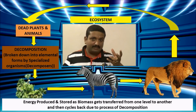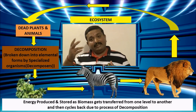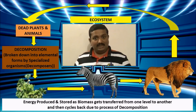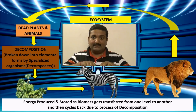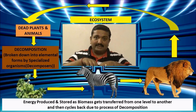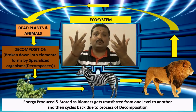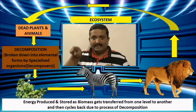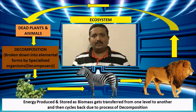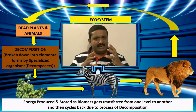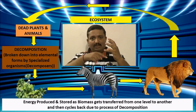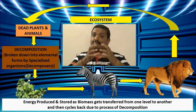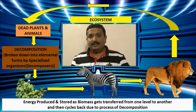Once energy returns to the soil it is present as nutrients, which plants take up and grow — the circle of life begins fresh again. This is how an ecosystem basically functions. Any environment that has this cyclic movement of energy can become established as an ecosystem.